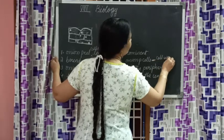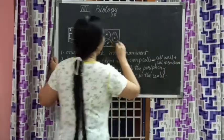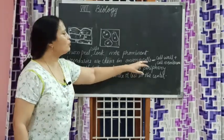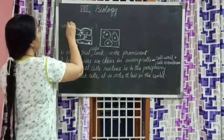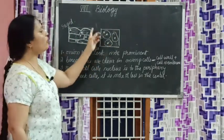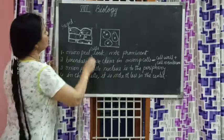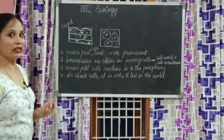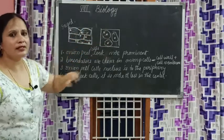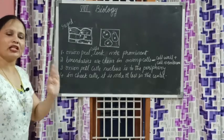Onion peel cells are prominent because they have a cell wall along with a cell membrane. Animal cells only have a cell membrane - they don't have a cell wall. That's why onion peel looks more rigid. Because of the absence of a cell wall, cheek cells are not prominent and do not have a clear boundary. In onion peel, the nucleus is almost to the periphery, while in cheek cells the nucleus is more or less in the center.